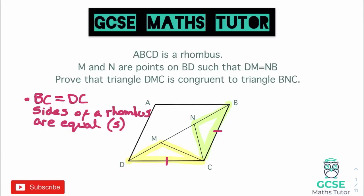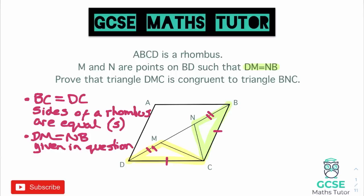We were also told in the question that DM equals NB, which are sides on both triangles. So our second bullet point: DM is equal to NB, and for that one it's given in the question. That is also a side. So we've now proved two sides.